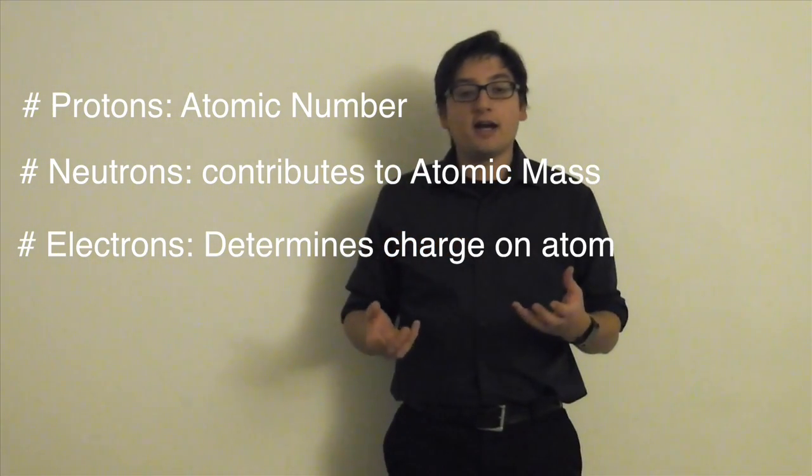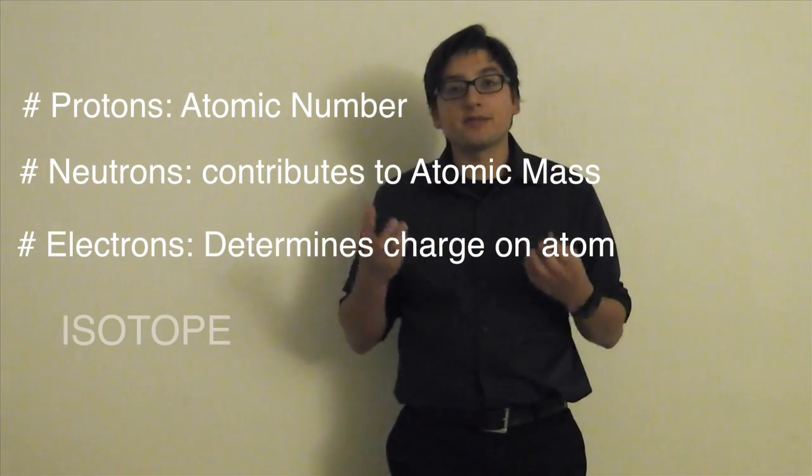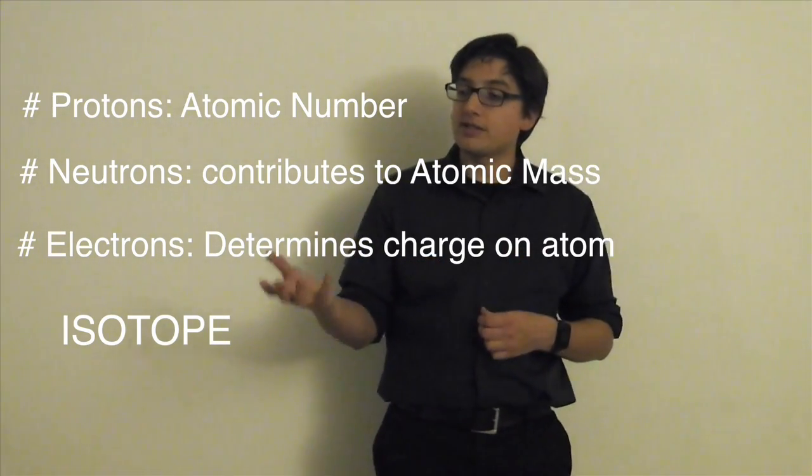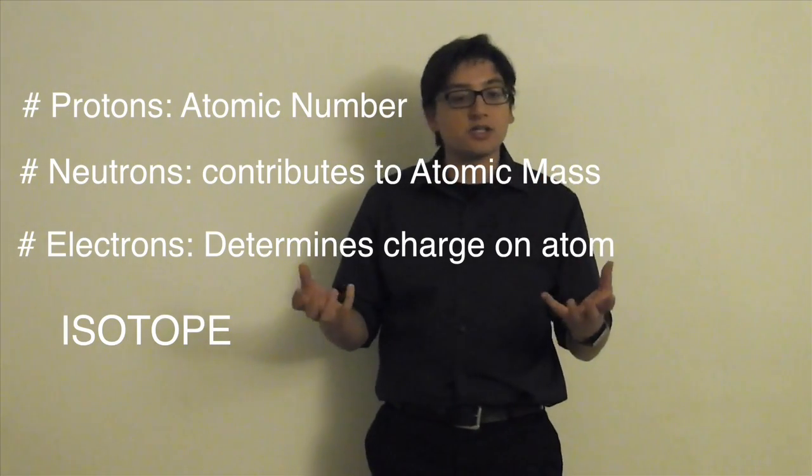remember what I mentioned, if you have two different atoms of helium and they have different numbers of neutrons, the word for that is isotopes. There are different isotopes. This is one isotope is, weighs three, and this other isotope weighs four, helium, right?